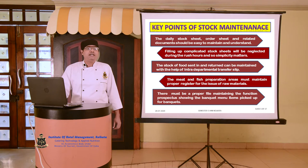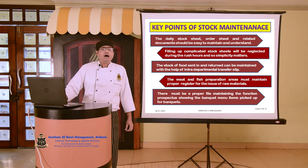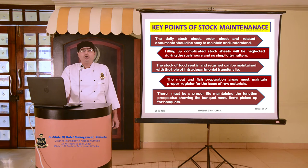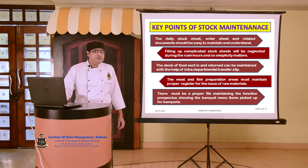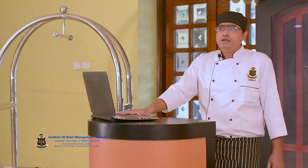The stock of food sent in and returned can be maintained with the help of an intradepartmental transfer slip. This is very important to ensure there is a proper record of what is going out of the larder and what has been returned. A summary of those slips can be made at the end of the day to see what has actually gone out and what has been returned. The material which has been returned should be reused so that the cost incurred to procure it can have a reflection in the profit earnings.